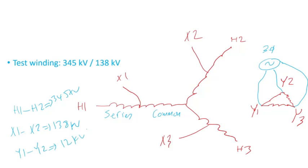For this auto transformer with a test winding: H1 to H2 is 345 kV, X1 to X2 is 138 kV, and Y1 to Y2 is whatever the manufacturer designed — for instance 12 kV. The series winding, common winding, and test winding are all wound around the same core, so they all see the same flux. When you apply voltage to the test winding, that flux links the common and series windings — that's how the test is performed under this condition.